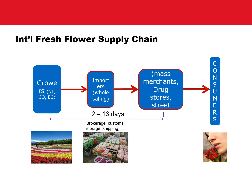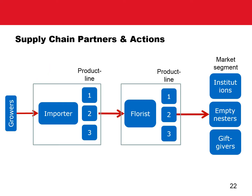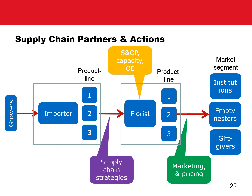Importers are responsible for brokerage, custom clearance, storage, and shipping. The florists are responsible for decorations, selling, and storage. In the Floral Park simulation, each supply chain partner has an indispensable role. For example, the florist provides three products from basic to expensive flowers to three market segments: institutional buyers such as wedding and funeral houses, hotels and restaurants; empty nesters; and gift givers such as lovers during Valentine's Day. The florist makes decisions on marketing and pricing, sales and operations planning including capacity and operations excellence, and also negotiates supply chain contracts with the importers.